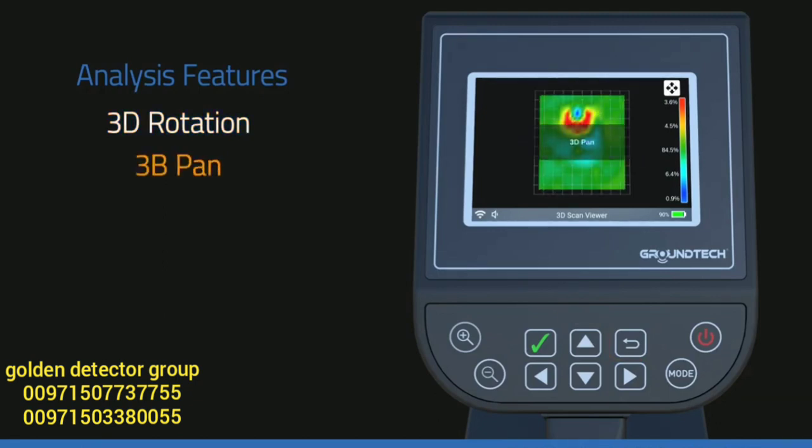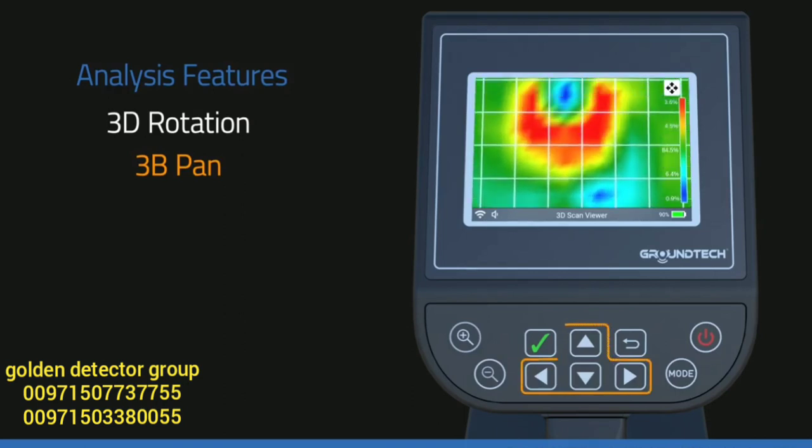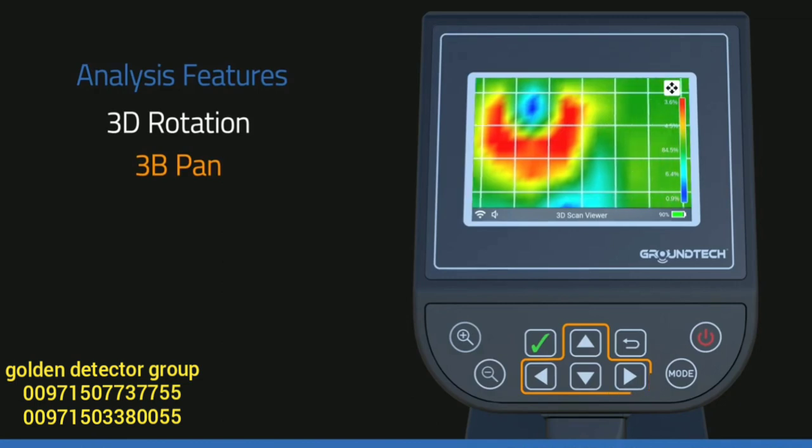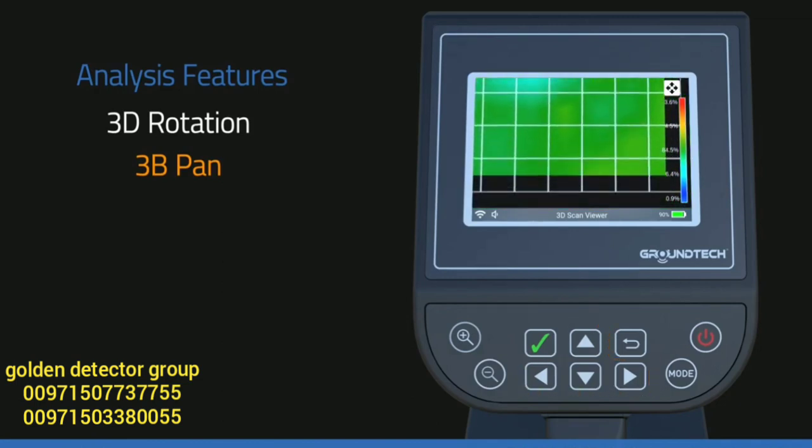3D pan: you can examine your graph and the colors closely by zooming in. You can move the graph left and right, up and down with direction buttons and go through the graph.